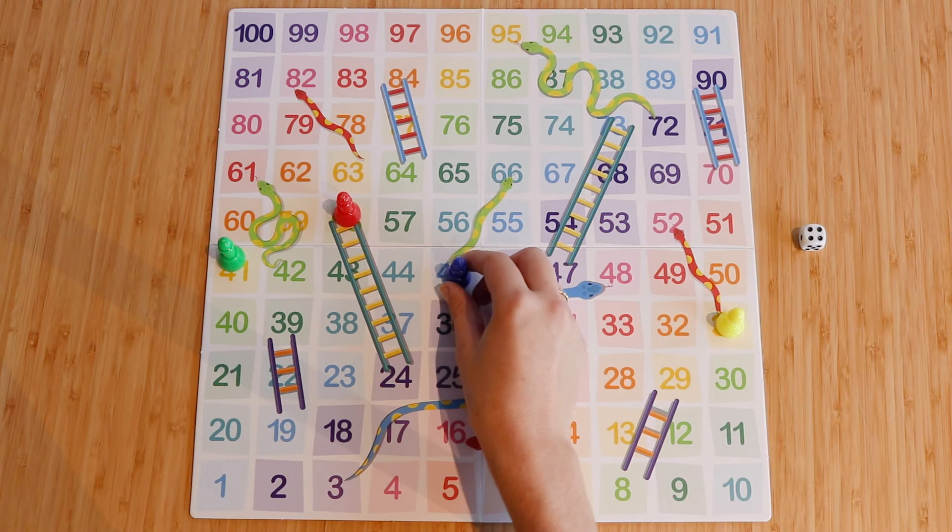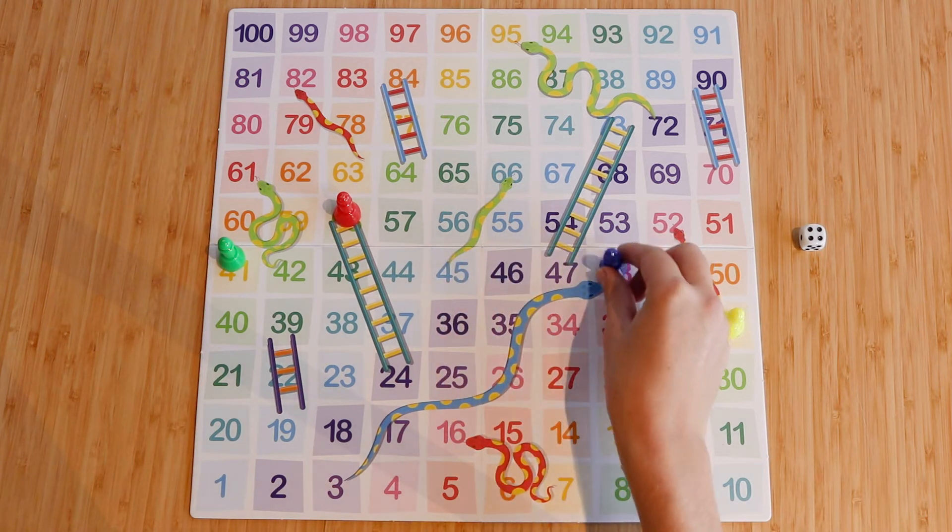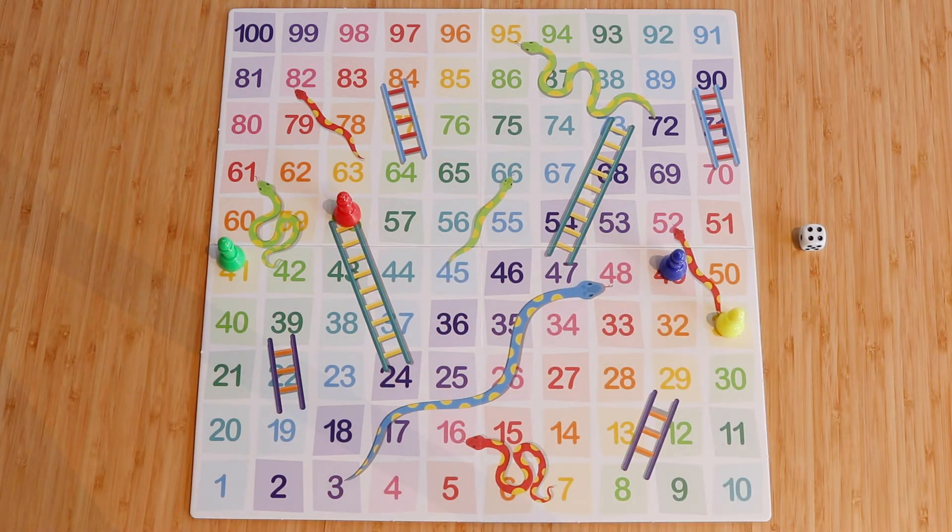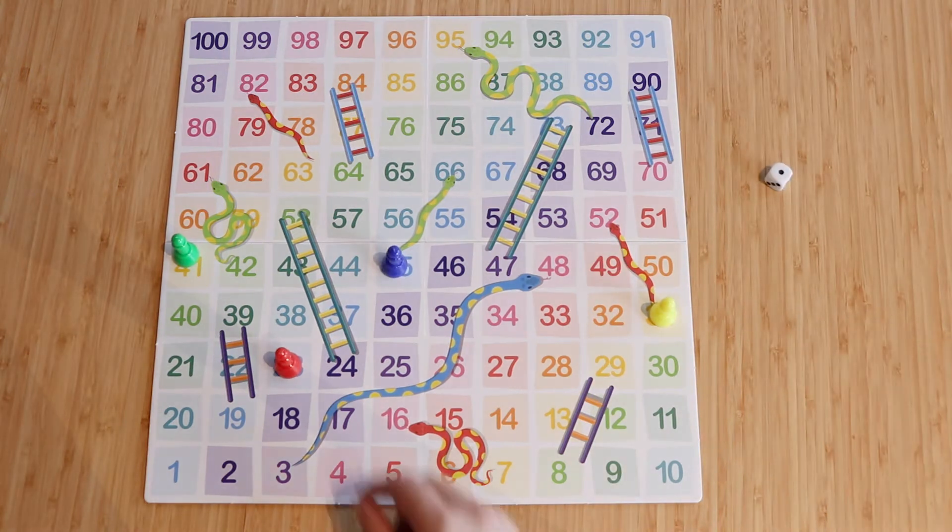Encourage early numeracy skills and logical thinking by taking turns rolling the dice to make your way up the board. Ladders will help you climb up the board faster.